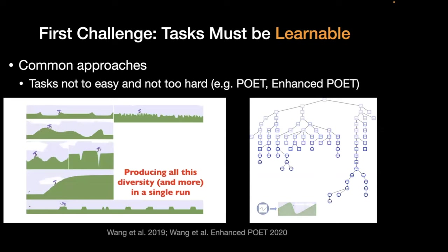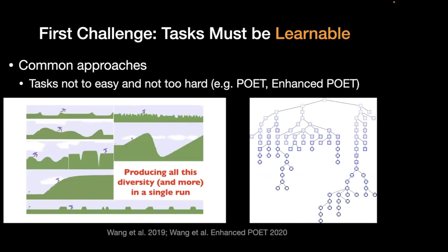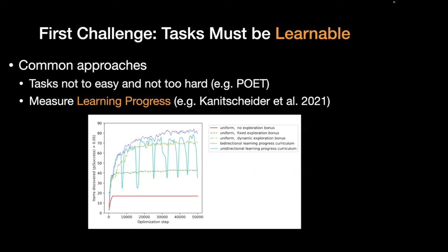Common approaches include: one, tasks that are not too easy and not too hard — based on difficulty — which we used in Poet and Enhanced Poet. A more principled approach is to use what's called learning progress, with a lot of work done by many people over the years, including Schmidhuber and Pierre.